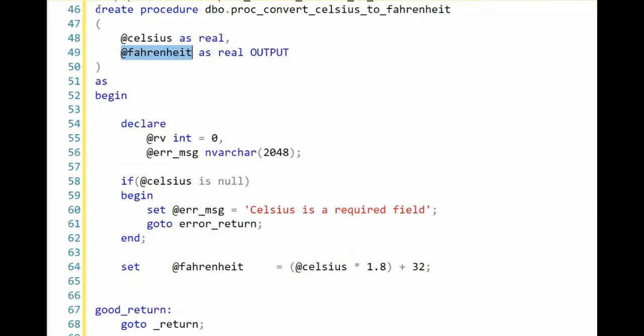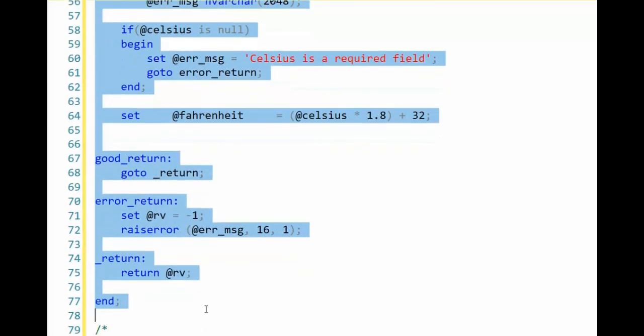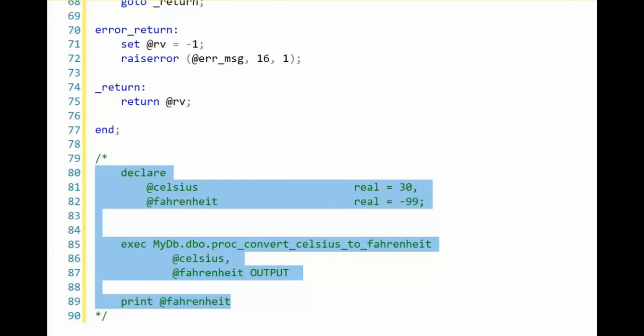And let's go ahead and create this store procedure. And when we create it, excellent, it's now created. And now we have a small test that says execute proc convert Celsius to Fahrenheit. And then my input parameter, and I said 30, and then my output. And notice I've declared that. Let's go ahead and execute this. Execute. And let's take a look at the output that I just received. And it is 86. And there you have it.